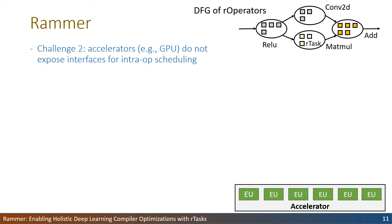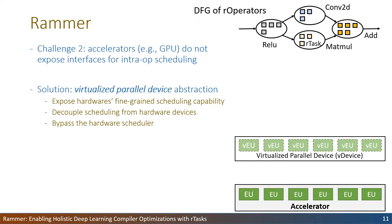Therefore, R-tasks as the fine-grained intra-operator information are exposed to Reimer. There is another challenge: accelerators like GPUs do not expose interfaces for intra-operator scheduling. To address this, Reimer abstracts a hardware accelerator as a virtualized parallel device. It contains multiple Virtual Execution Units (VEUs) and allows R-tasks from different operators to run on a specified VEU. A VEU will be mapped to one of the physical EUs in an accelerator to perform the actual computation of R-tasks.